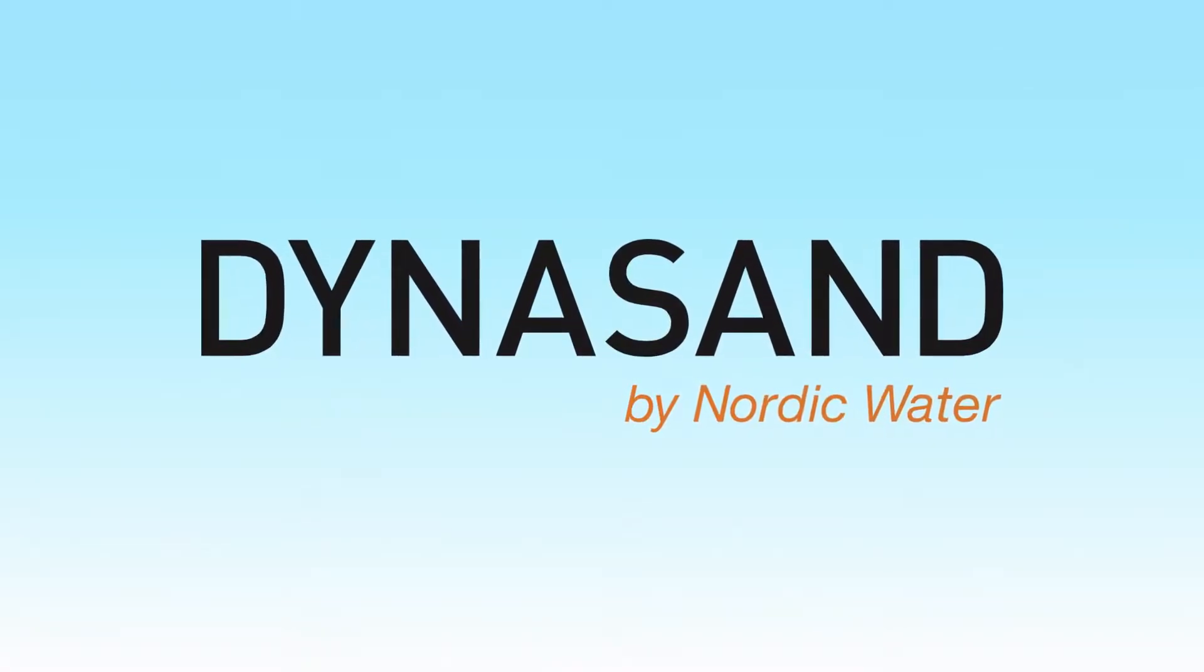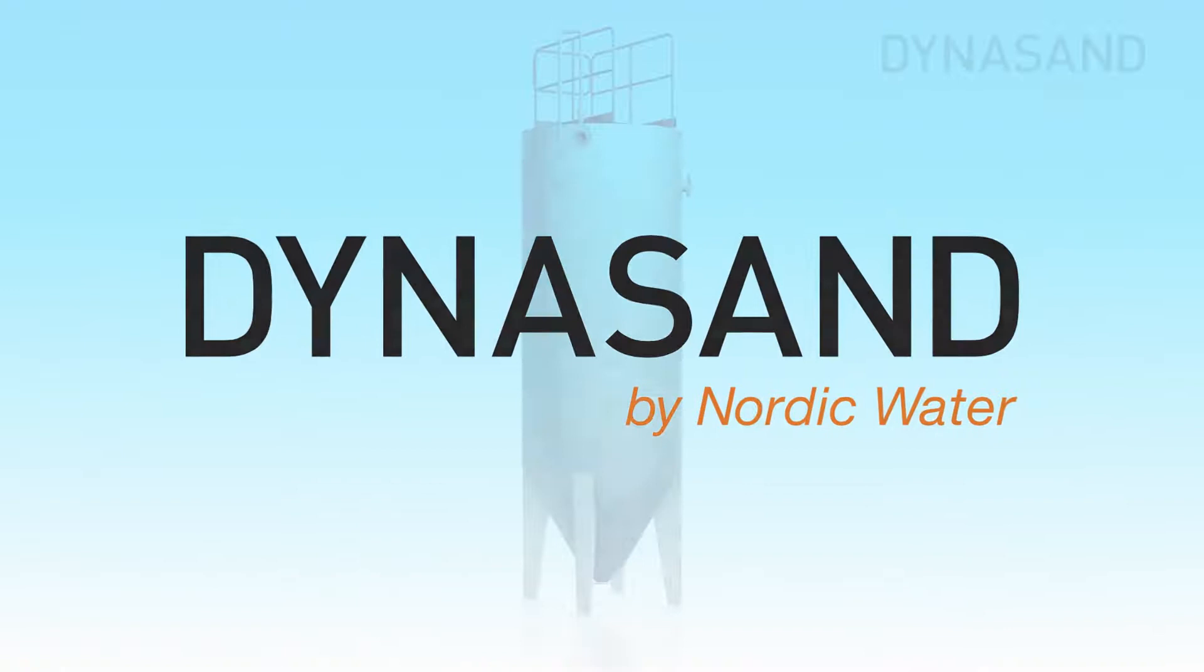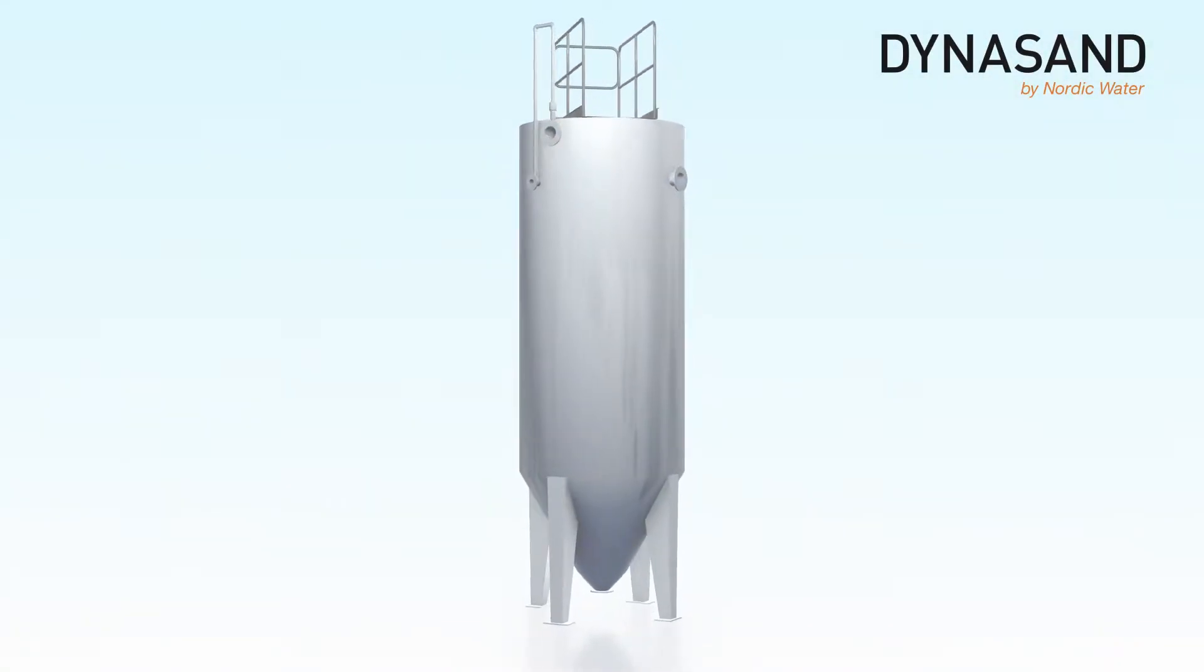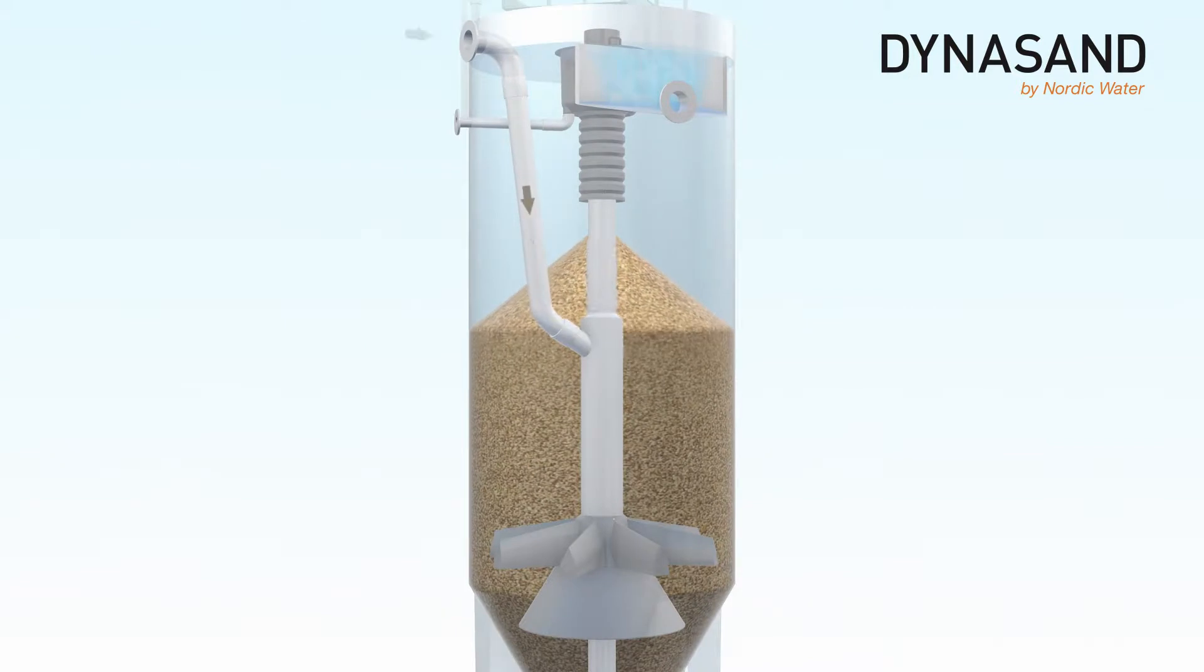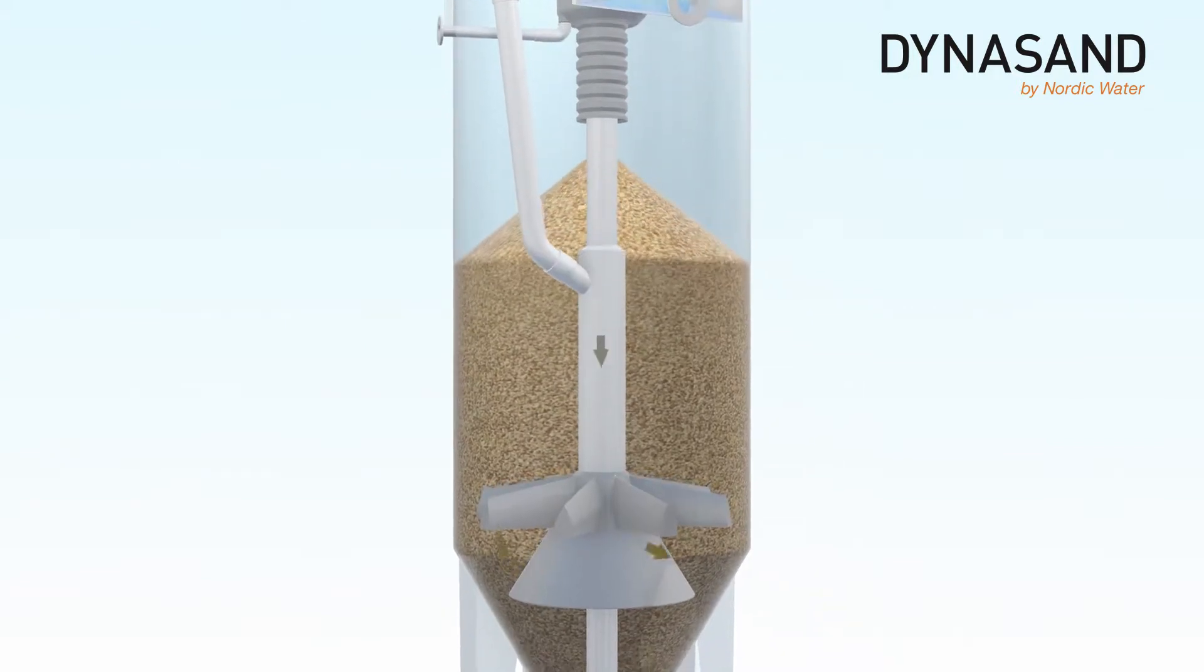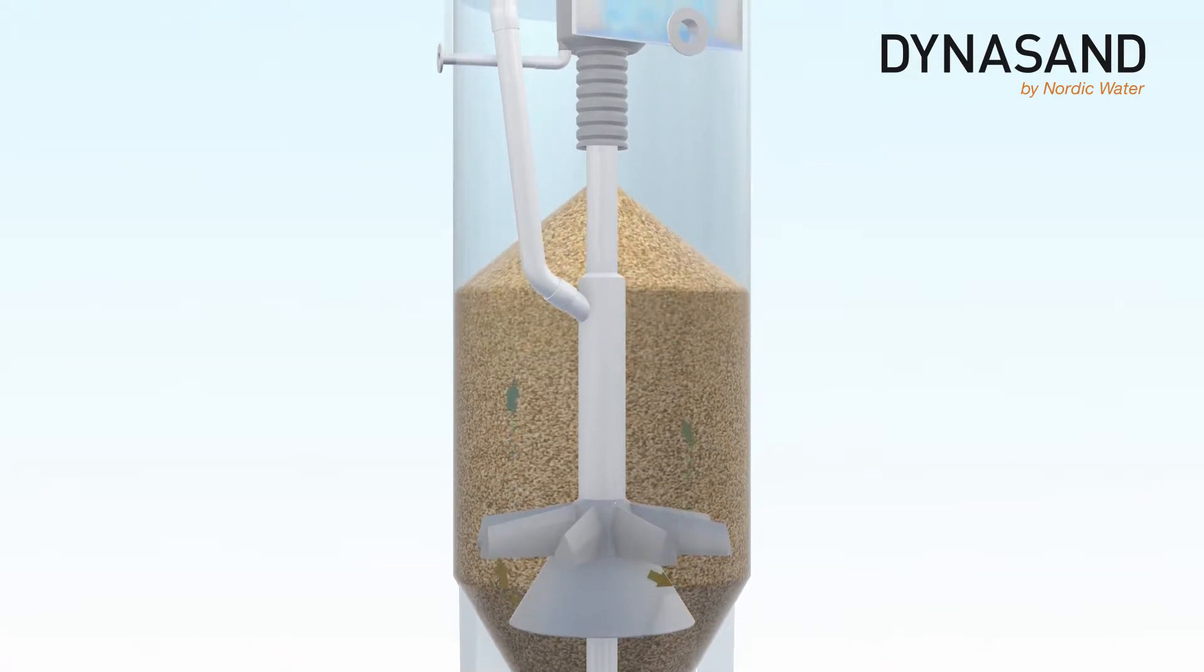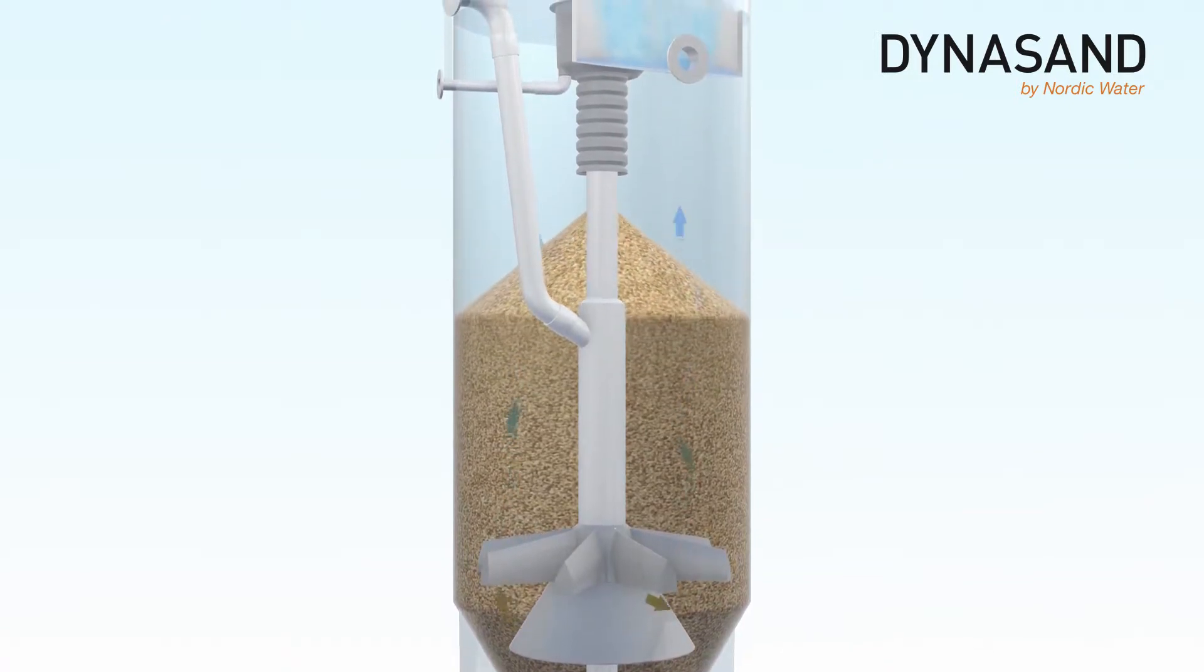Welcome to this short demonstration of how the Nordic Water Dynasand filter works. Water is fed into the Dynasand filter through the inlet pipe and is led down to the water distributor. Here the water is distributed and travels up through the filter bed.